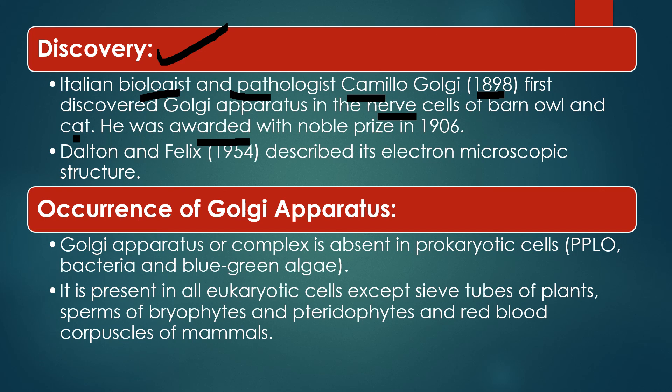The ultrastructure of Golgi body, that is the detailed structure, was discovered by Dalton and Felix in 1954. They described the ultrastructure of Golgi bodies, which is why Golgi apparatus is also known as Dalton complex.